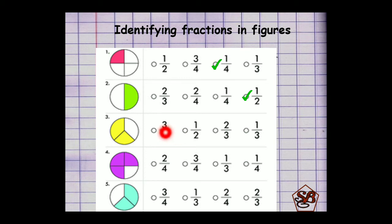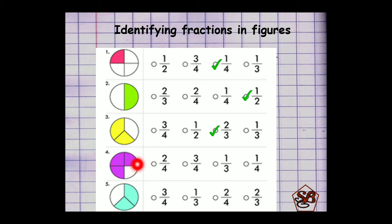Coming to the third one, the third figure is divided into 3 equal parts, so denominator should be 3. And out of that, 2 are shaded or colored in yellow. So we have to choose numerator 2 and denominator 3 — the fraction will be 2 by 3. Next figure is divided into 4 equal parts and out of that 3 are shaded. That means numerator is 3 and denominator is 4, so the correct fraction is 3 by 4. Last one: 3 total parts and out of that 2 are shaded, so the correct fraction is 2 by 3.